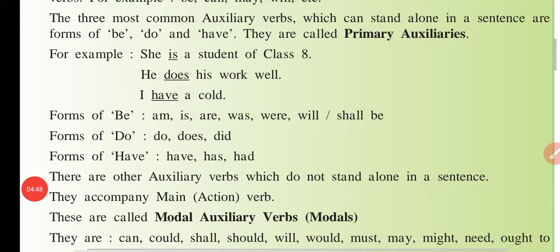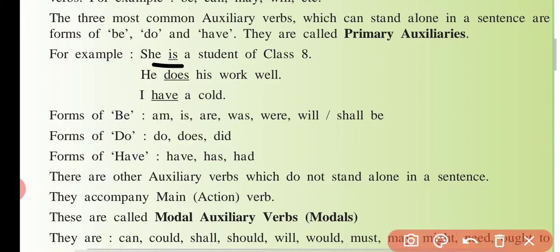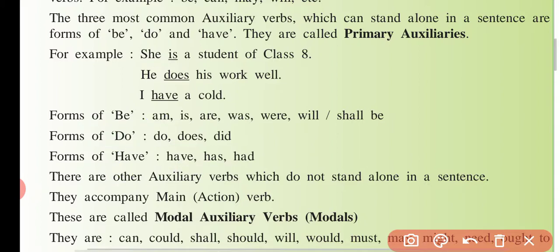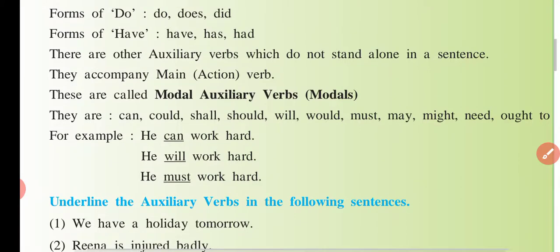Toh students, ye jo verb hai, ye do type se kaam kar sakti hai — helping verb aur main verb. Akeli aa gayi toh main verb, aur doosri verb ke saath aayi toh helping verb. Toh vahe hai — B ki form, do ki form, aur have ki form. Aur kuch verb aisi hoti hain jo akeli nahi aa saktin sentence mein. Agar woh aayi hai toh doosri verb bhi saath mein aayegi hi.